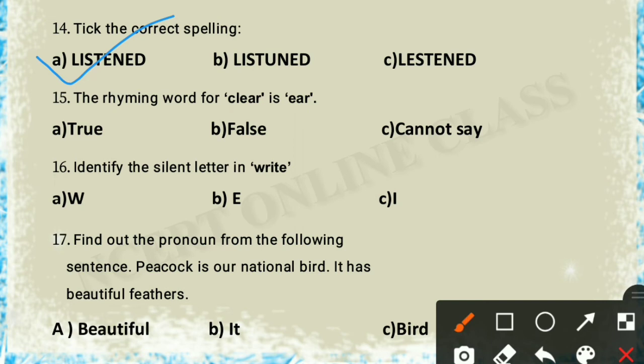Question 15: the rhyming word for 'clear'. The rhyming ending is '-ear'. Looking at the options, the rhyming word is correct.